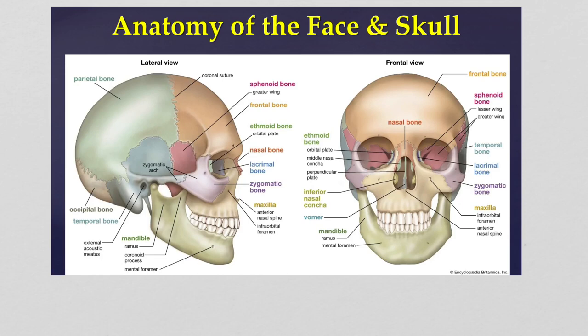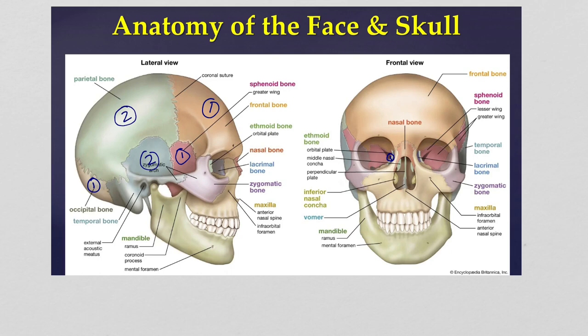Moving on to the anatomy of the face and skull. The cranium itself is made up of eight bones. Those eight bones include two temporal bones, two parietal bones, one occipital bone, one ethmoid bone, one frontal bone, and one sphenoid bone. The two lateral cranial bones are going to be the parietal bone and the temporal bone. The temporal bone is the most lateral, and the parietal bone is going to be lateral posterior.